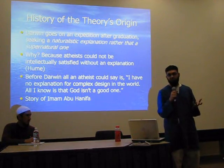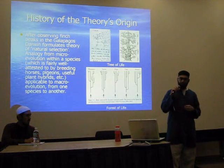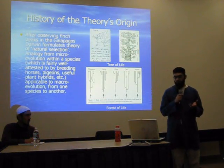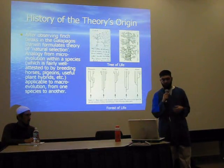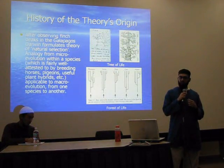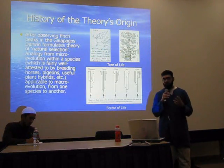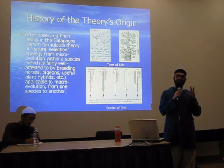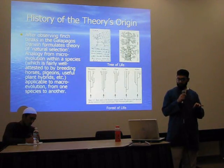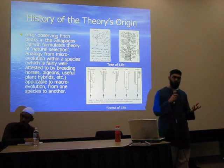Otherwise, people aren't going to accept it. So Darwin's on this voyage, and after observing finch beaks and some other species in the Galapagos Islands, Darwin formulates his theory of natural selection. Basically, what he's doing is taking an analogy from microevolution within a species and saying that should be applicable to macroevolution — from one species to another.